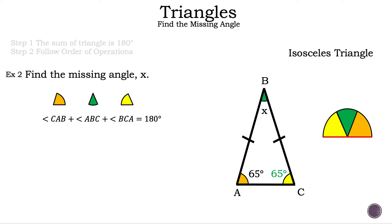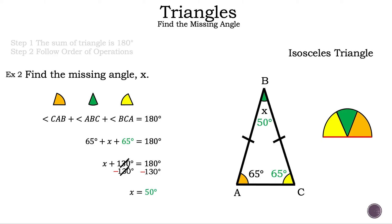Let's go ahead and substitute what we know. Now we have 65 degrees for the orange angle, plus X for the green angle, plus 65 degrees for the yellow angle. Let's simplify the left-hand side by adding the two 65-degree angles, and the result is 130 degrees. Now we have X plus 130 degrees is equal to 180 degrees. The inverse of plus is subtraction, so we subtract 130 degrees on the left-hand side. Those two numbers cancel, and now we subtract 180 degrees minus 130 degrees. The result is 50 degrees. So our missing angle X is 50 degrees. That is the answer for example two.